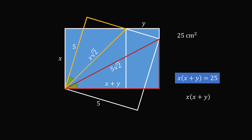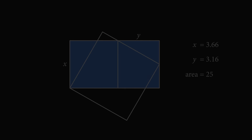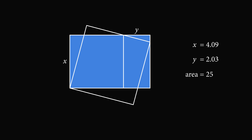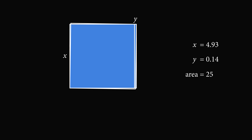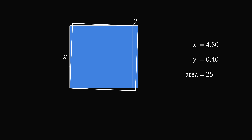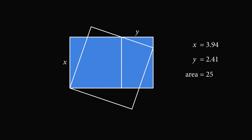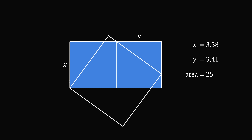Once again, you might wonder if we can solve for the values of x and y individually — we cannot; the values depend on each other. If we vary y and let y approach 0, then x approaches 5, the squares become coincident, and the combined area equals 5 squared, which is 25 square centimeters. But this is true for all values of y, so all these configurations still lead to a combined area of 25 square centimeters.